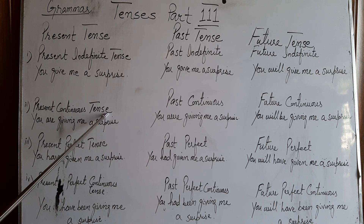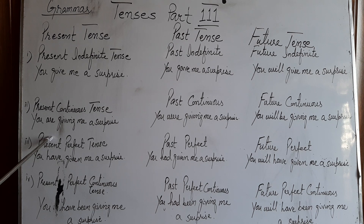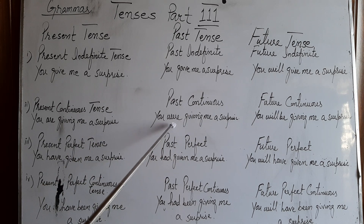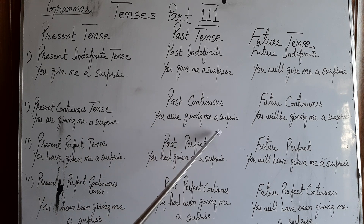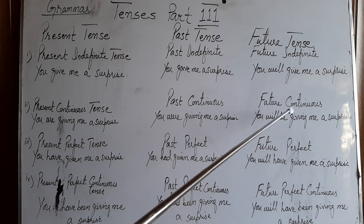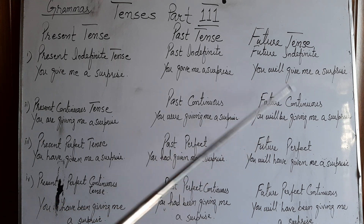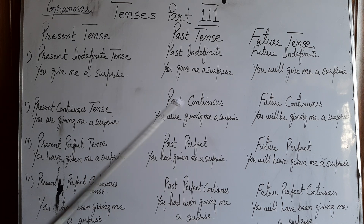In present continuous tense, you use helping verbs am, is, are and ing with verb — you are giving me a surprise. In past continuous, you were giving me a surprise. In future continuous, because you cannot use ing directly after will, you use will be or shall be, and ing with verb — you will be giving me a surprise.